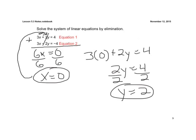And that's our solution. We get the ordered pair (0, 2). That's our solution to that system of linear equations.